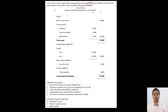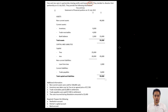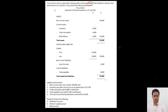Let's start with our realization account. It begins by closing all the assets of the firm except the bank account, and closing all the liabilities except the partner's loan. So non-current assets of 40,000, inventory of 9,000, and trade receivables of 4,000 — these three assets are transferred to the debit side of the realization account. On the liability side, we just have trade payables of 8,000, which is transferred to the credit side of the realization account.